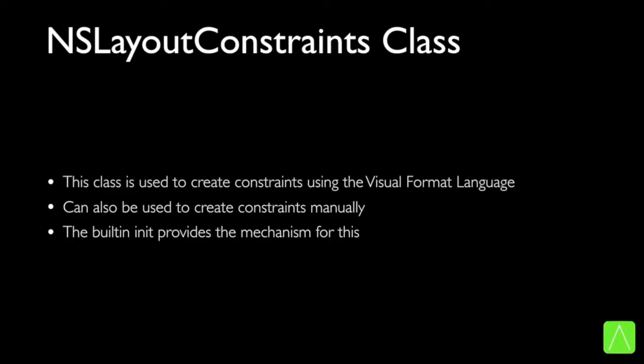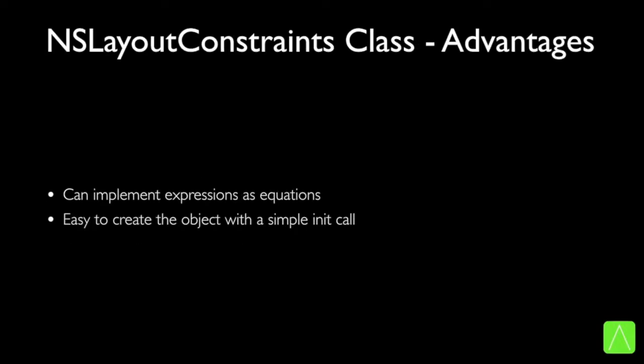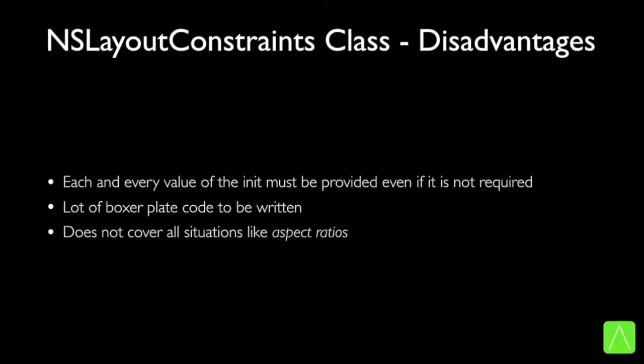The NSLayoutConstraints class describes constraints programmatically. We can use the init method to manually create this class, or use a class-level function to implement constraints using visual format language. The advantage of using the NSLayoutConstraint class init method is that we can directly implement it like an equation, quite similar to what we get when implementing auto layout on storyboard. The drawback is that each and every value in the init method must be provided, even if it is not being used, leading to a lot of boilerplate code. It also has limits on the kind of constraints that can be applied.